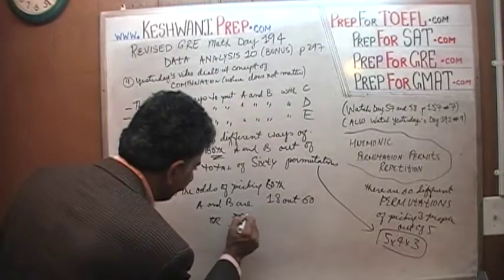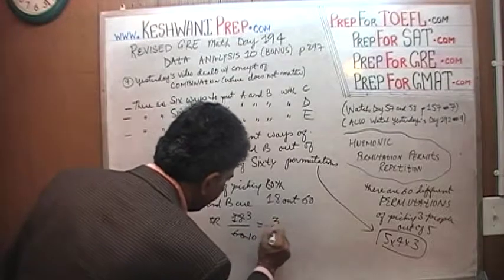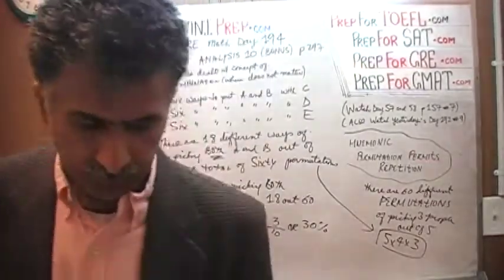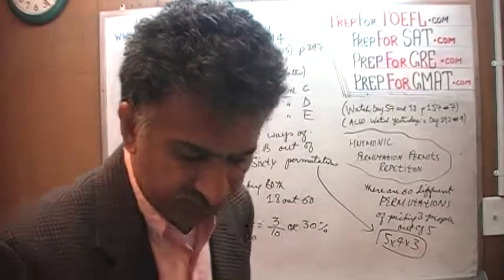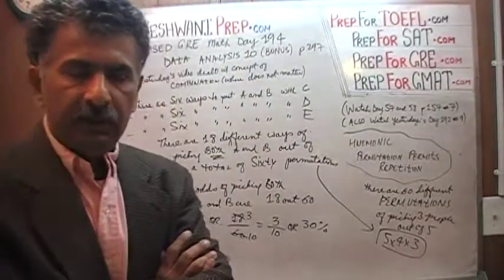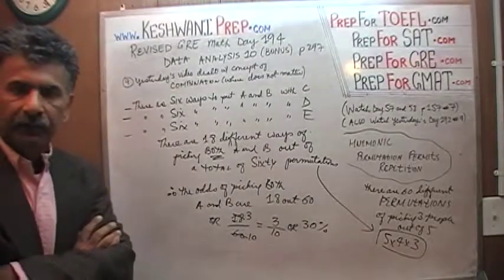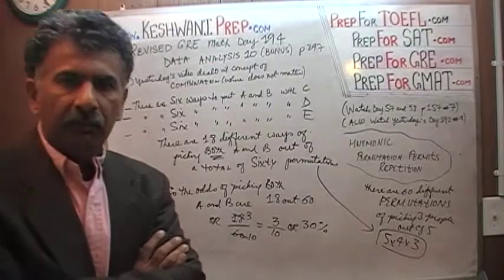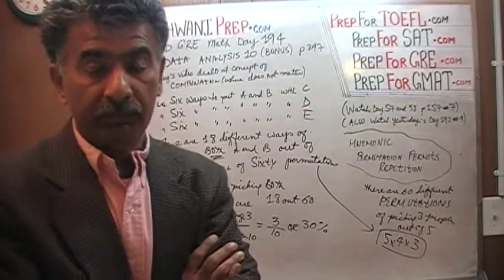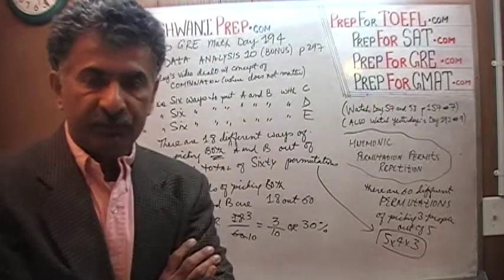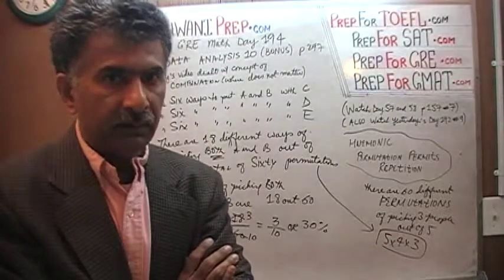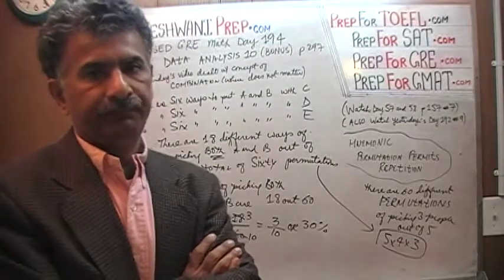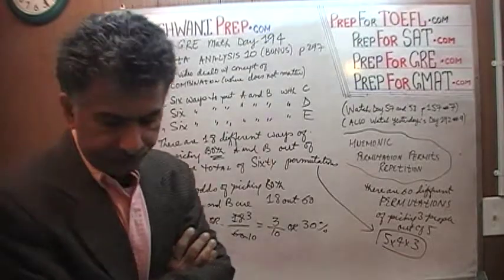Divide top and bottom by six, and you end up with three-tenths — a thirty percent chance. In other words, if you had five people and were asked to pick three at random, there is a thirty percent chance that whichever group you pick will contain both A and B — or for that matter, any given pair of people you choose. There is a thirty percent chance of picking a given pair when choosing three people out of five at random. I'll see you tomorrow. Bye now.